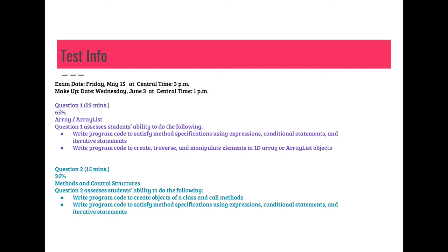Just a reminder about the two different questions on the test. Your entire test is 45 minutes, so you'll have 25 minutes for question one, which is 65 percent of the test. This one is going to be about arrays and array lists, so make sure you review how to do arrays and array lists and have your Java Quick Reference sheet. It's going to assess students' ability to write program code to satisfy methods and specifications using expressions, conditional statements, and iterative statements — that just means loops — and write code to create, traverse, and manipulate elements in 1D arrays or array lists.